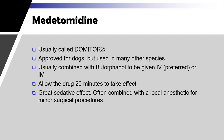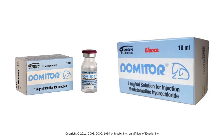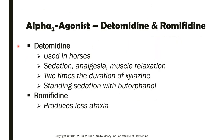For medetomidine, its brand name is Domitor. It is approved for dogs and is usually combined with vitorphenol, which is an opioid, given IV (preferred) or IM. Allow the drug 20 minutes to take effect; it has a great sedative effect, often combined with a local anesthetic for minor surgical procedures. Detomidine, which is closely related to medetomidine, is used in horses. It causes sedation, analgesia, and muscle relaxation. It has twice the duration of silocene and provides standing sedation with vitorphenol.